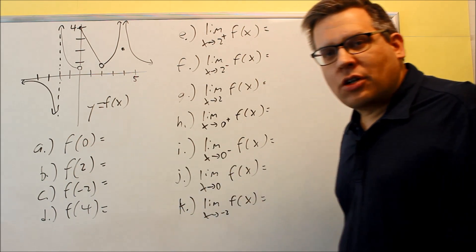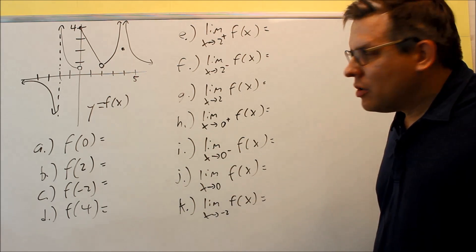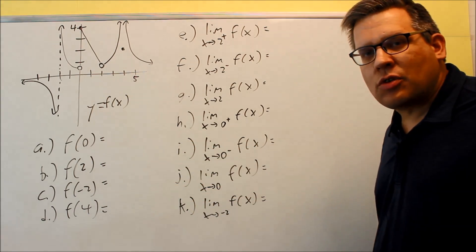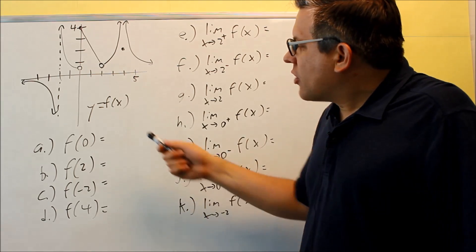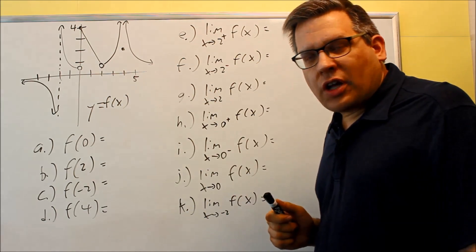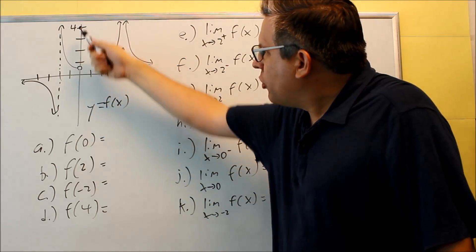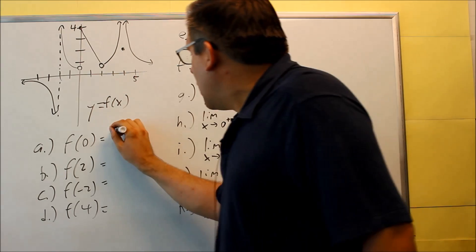Recall this notation - f(0) is asking for the y value when x is zero. Whatever is inside the parentheses is going to be x. When I go to zero, you're always looking for the closed circle - that's where the value is defined. We don't want the open, we want the closed one, so this is going to be four.